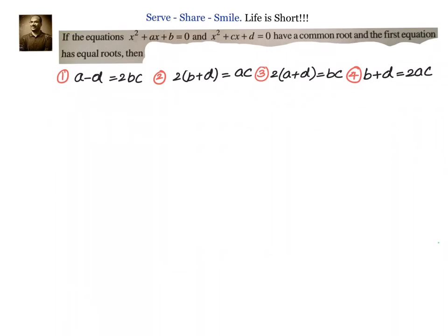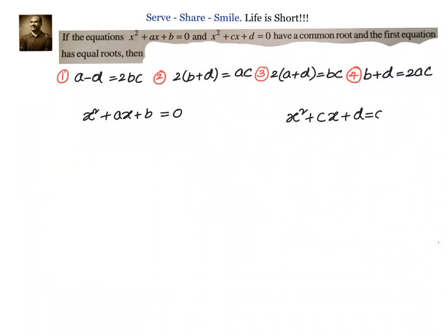To solve this problem, let us take one by one the given quadratic equations. The first equation is x² + ax + b = 0, and the second one is x² + cx + d = 0. If they both have a common root, let us say that root is alpha.